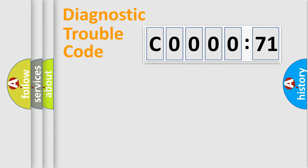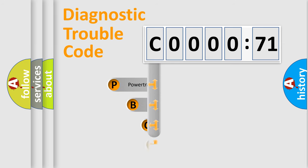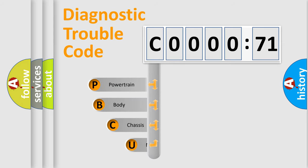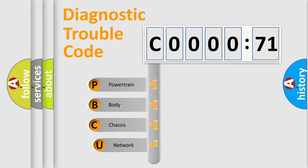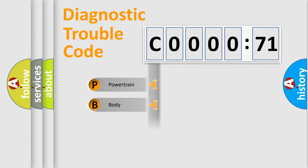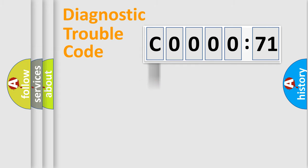First, let's look at the history of diagnostic fault code composition according to the OBD2 protocol, which is unified for all automakers since 2000. We divide the electric system of an automobile into four basic units: Powertrain, Body, Chassis, and Network.